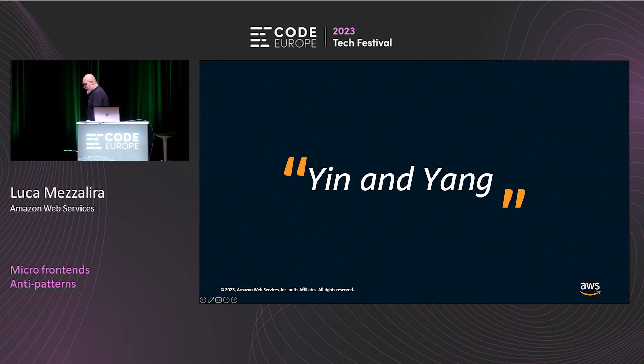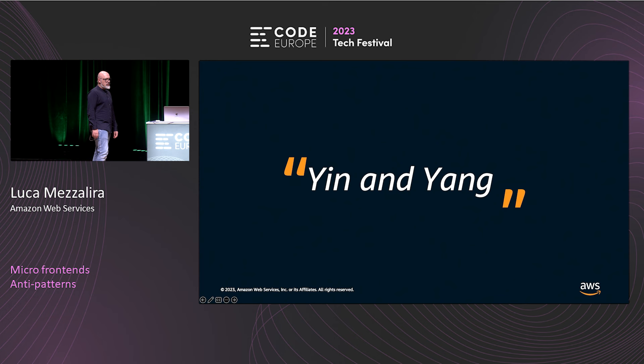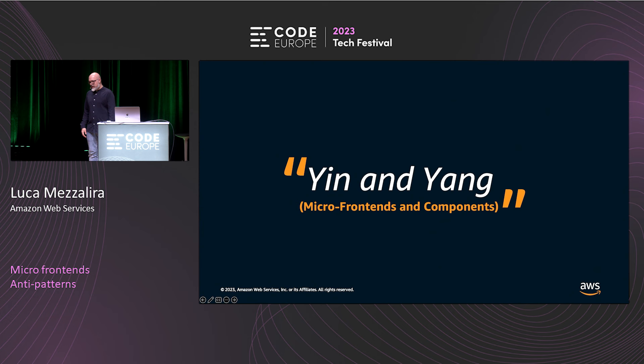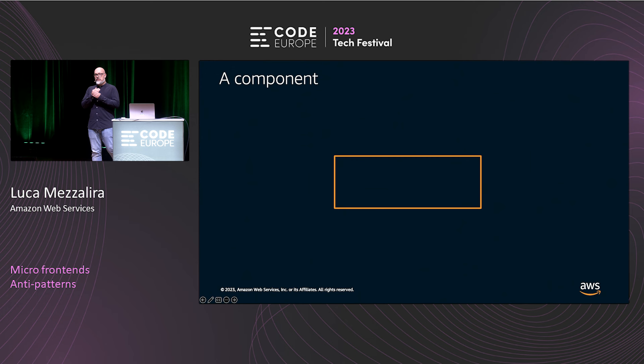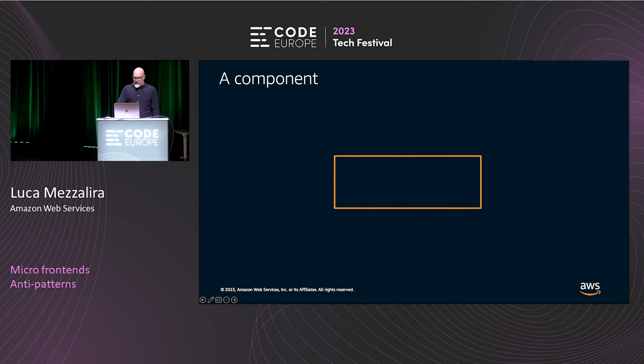So let's start with the anti-patterns, which is the main reason I'm here today. I start with the first one, which I call the yin and the yang. The main anti-pattern here is the difference between micro-frontends and components, because — big spoiler — they are not the same. Let's start with the example of a component: pick the classic example, the button.